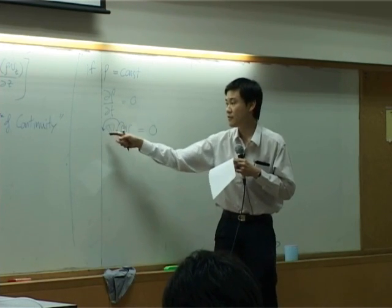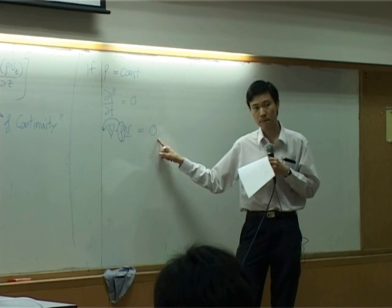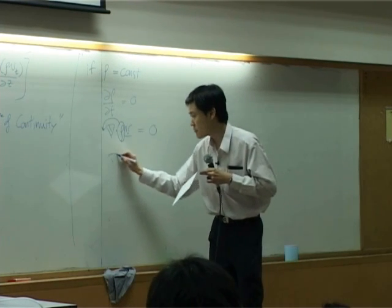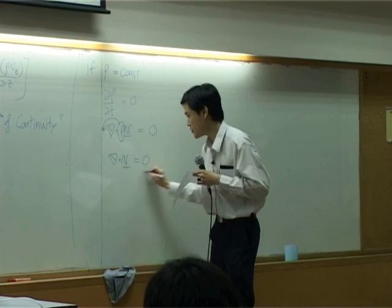it can be cancelled with this zero. As a result, you get del dot v equal to zero. Remember this?